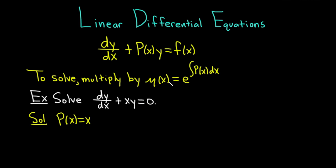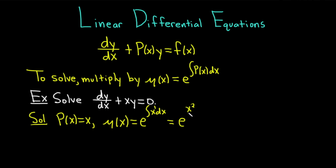So we're ready to work out the integrating factor, which is μ(x). μ(x) is equal to e to the integral of P(x) dx. But our P(x) is x, so it's just x dx. Using the power rule — x to the first power, so we add one to the exponent and divide by the result — it'll be x squared over two. You don't have to write the plus c. So μ(x) is equal to e to the x squared over two.